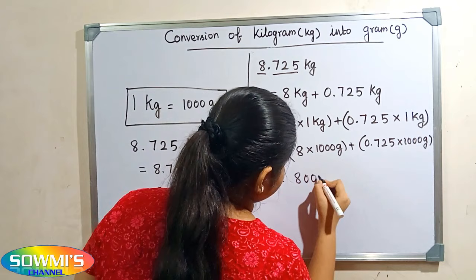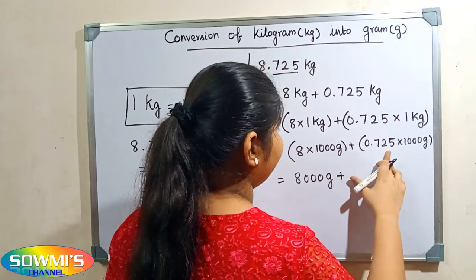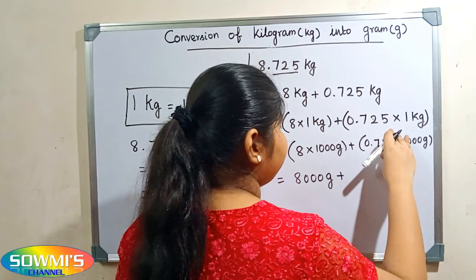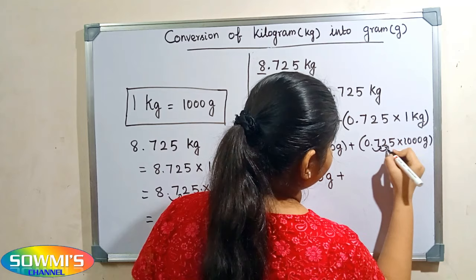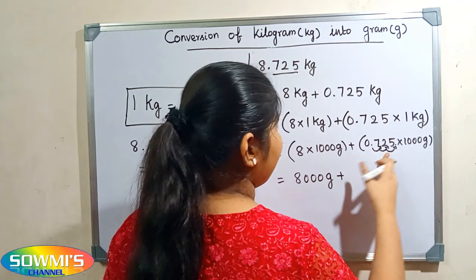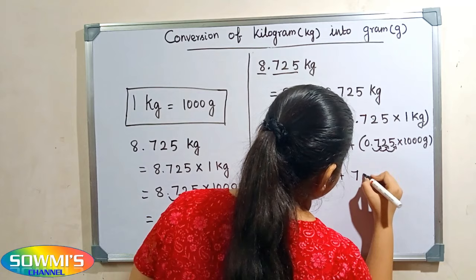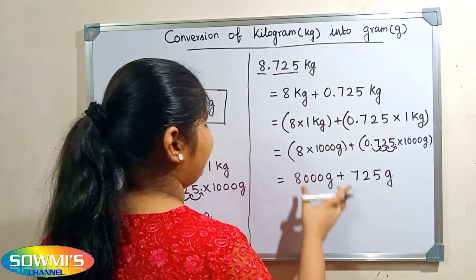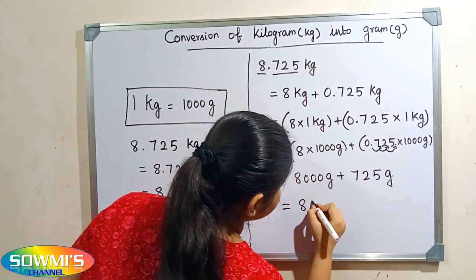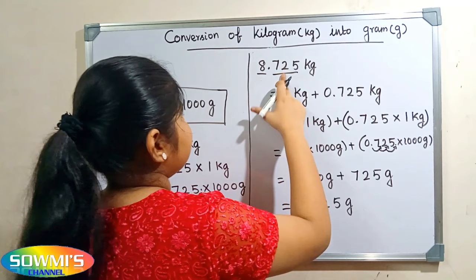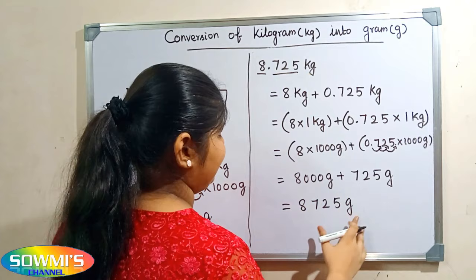8 multiplied by one thousand grams equals 8,000 grams. To multiply 0.725 by one thousand, we move the decimal point three places to the right: 1, 2, 3 — so 0.725 multiplied by one thousand grams equals 725 grams. Now we add 8,000 grams and 725 grams; our answer is 8,725 grams. That is, 8.725 kilogram is equal to 8,725 grams.